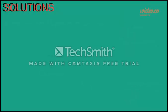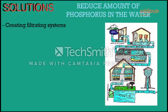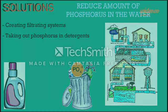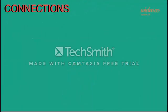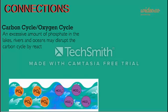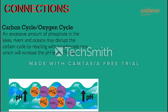Some solutions that were attempted were to reduce the amount of phosphorus in the water by creating filtration systems, and in the 1990s, phosphorus was taken out of detergents. Connections: Carbon cycle and oxygen cycle. An excessive amount of phosphate in the lakes, rivers, and oceans may disrupt the carbon cycle by reacting with bicarbonate ions, which will increase the pH level. It will also affect the oxygen cycle.